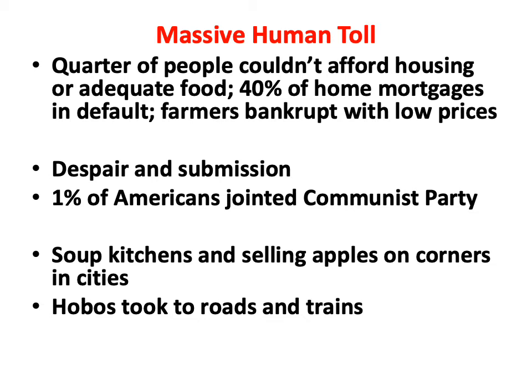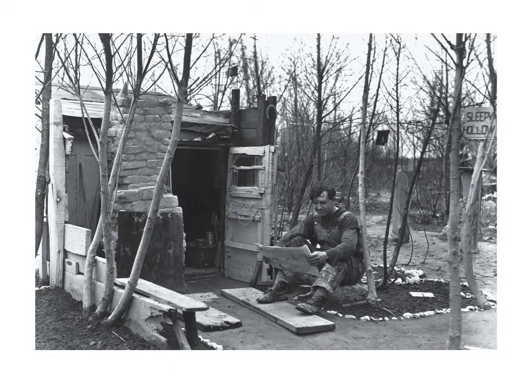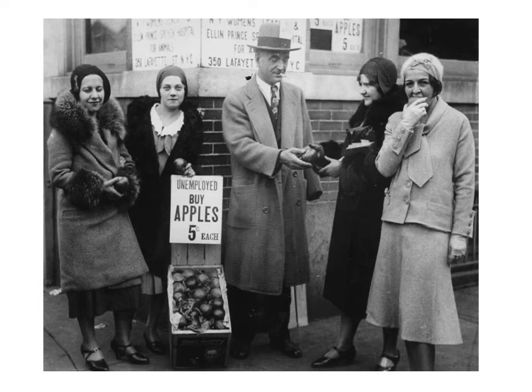People without jobs were called hobos — they went on roads, jumped on freight trains without money, hoping to find work in another city or on a farm. There's a photo of a former wealthy businessman and his family living in a little hut they constructed in a city park after losing their home. Another photo shows a man with a nice coat and hat — clearly formerly well off — selling apples for five cents each, which became iconic of the Depression.